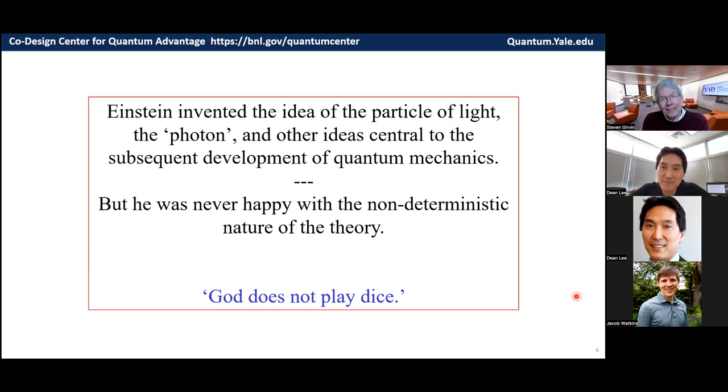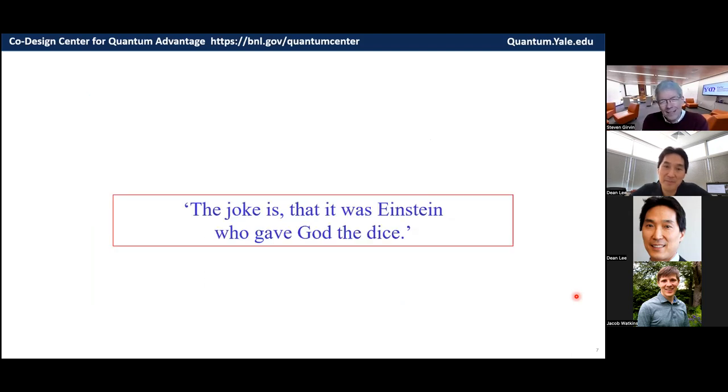He was never happy with the fact that the theory didn't predict exact outcomes, only probabilities of different outcomes. And he summarized this by saying God does not play dice. But ironically, because his work really helped lead to quantum mechanics, the big irony is that it was Einstein who really gave God the dice, as people say.